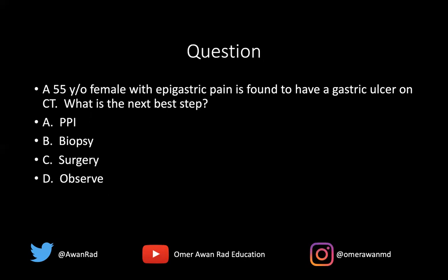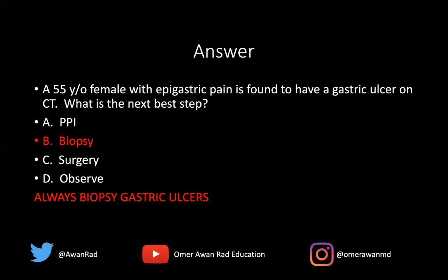Another high-yield question: a 55-year-old female with epigastric pain is found to have a gastric ulcer on CT. What's the next best step in management — prescribe a PPI, do a biopsy, do surgery, or observe? The answer is to do a biopsy, because this is a gastric ulcer. If it were a duodenal ulcer, that would be different — you might consider a PPI or endoscopy. But you always biopsy gastric ulcers on the USMLE because there is a high chance of malignancy with gastric ulcers.